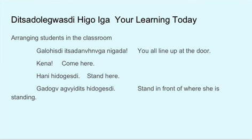Kena — Come here. Hani. Hidogesti — Stand here. Stand in front of where she is standing.